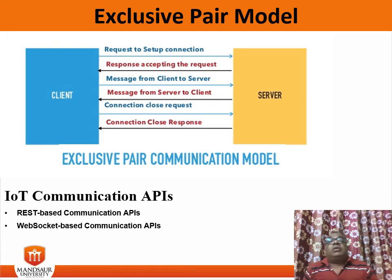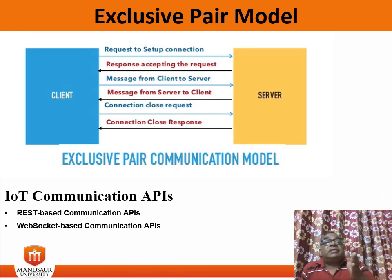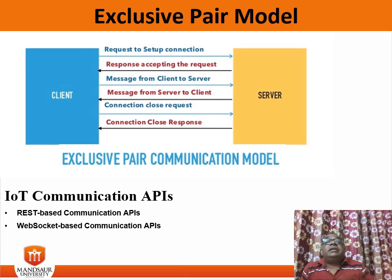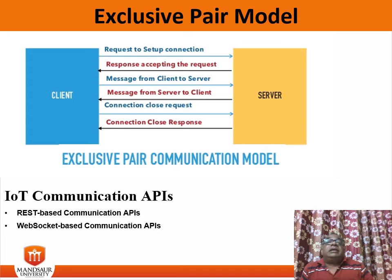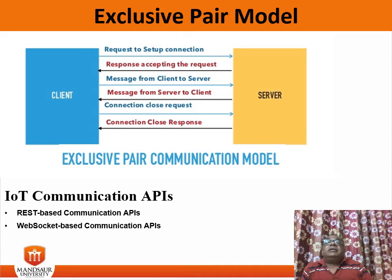The last constraint is code on demand. The server can provide executable code or scripts for the client to execute in their context. This constraint is the only one that is optional. A RESTful web service is a web API implemented using HTTP and REST principles. REST is the most popular IoT communication API.